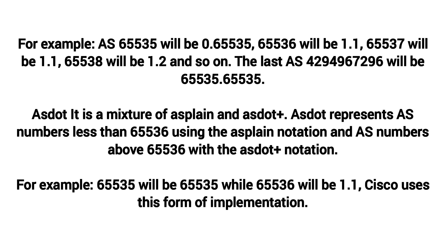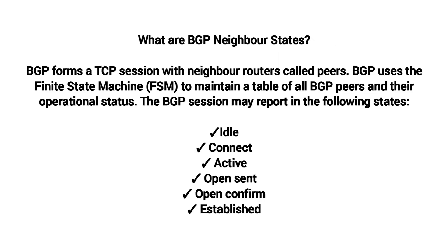AS Dot is a mixture of AS Plain and AS Dot Plus. It represents AS numbers less than 65536 using AS Plain notation, and AS numbers above 65536 with AS Dot Plus notation. For example, 65535 will be written as 65535, and 65536 will be written as 1.0. Cisco uses this form of implementation.